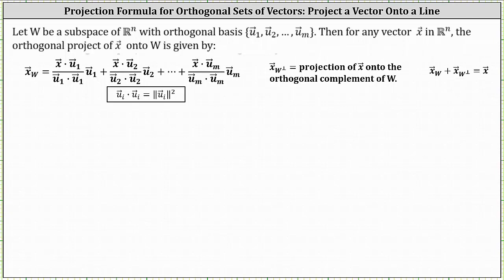Welcome to an example on how to use the projection formula for orthogonal sets of vectors to determine the projection of a vector onto a line, as well as how to determine the distance from a vector to a line.